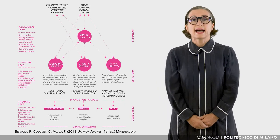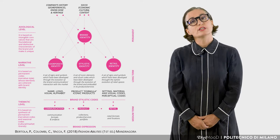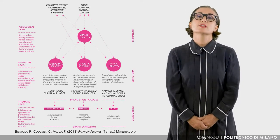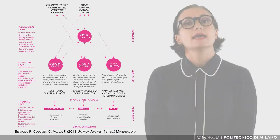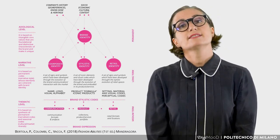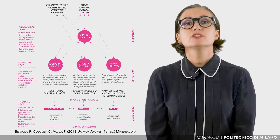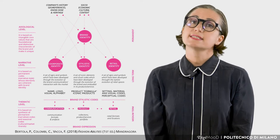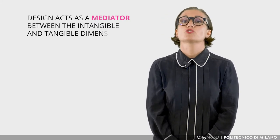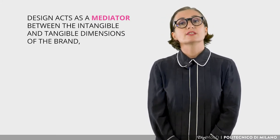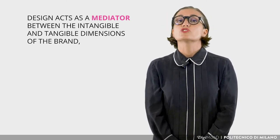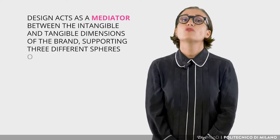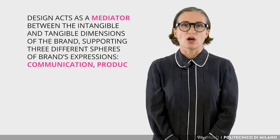To serve as a guide for the design process, the Semprini semiotic model can be integrated into a framework to support brand identity interpretation. It represents the complexity of the brand's diverse expressions at all three levels, driving to identify the visual codes, signs and symbols which then translate into its aesthetics. This brand identity model can represent how design acts as a mediator between the intangible and tangible dimensions of the brand, progressively translating its values into visual codes which support three different spheres of brand expressions: communication, product and retail.